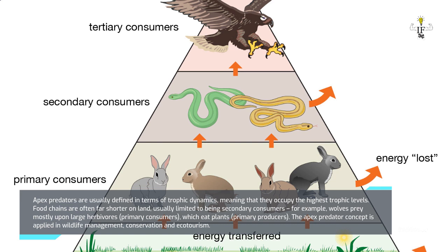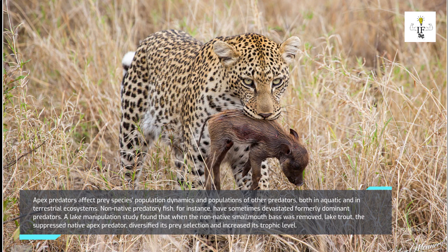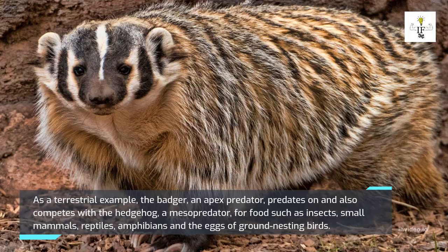Apex predators affect prey species population dynamics and populations of other predators, both in aquatic and terrestrial ecosystems. Non-native predatory fish have sometimes devastated formerly dominant predators. A lake manipulation study found that when the non-native smallmouth bass was removed, the lake trout — the suppressed native apex predator — diversified its prey selection and increased its trophic level.